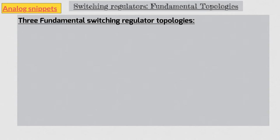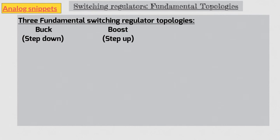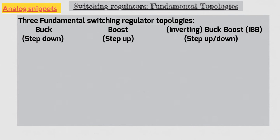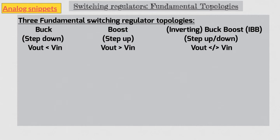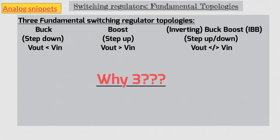Hello everyone. Welcome back to Analog Snippets. You may be aware that there are three fundamental switching regulator topologies: step down or so-called buck regulator, step up or so-called boost regulator, and step up-down or so-called buck-boost regulator. The fundamental buck-boost topology is inverting, meaning the polarity of the output voltage is opposite to that of the input voltage. The buck topology is step-down, so V_out is always less than V_in. For boost, V_out is always more than V_in, and for buck-boost it can be either less or more. Since IBB is inverting, we are talking about absolute voltages. This begs the question: why are there three and only three fundamental topologies? In this video we will try to answer just that, and in the process get a better understanding of switching regulators as well.